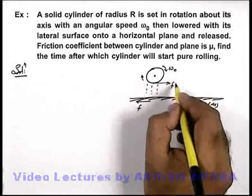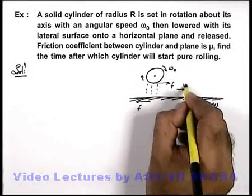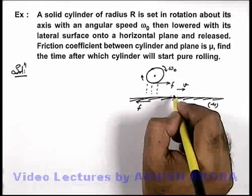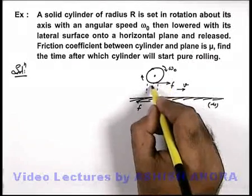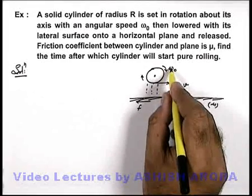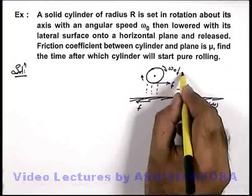And due to this friction we can say the linear speed of the cylinder will increase. And as the torque of this friction is opposite to this angular speed, this angular speed will decrease to omega.